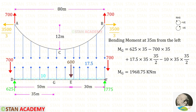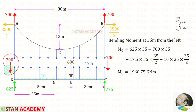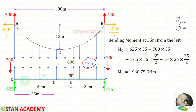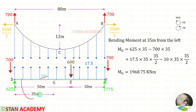Now let us find the bending moment at 35 meter from the left. The reaction is acting in the clockwise direction, so it will be positive with distance 35. The other reaction is acting in the anticlockwise direction, so it will be negative with distance 35. The equivalent uniformly distributed load is also acting in the anticlockwise direction and is negative over 35 meters. For the moment at point G we will get 1968.75 kN·m.